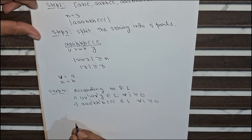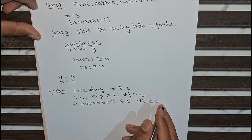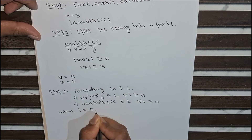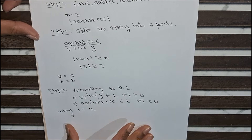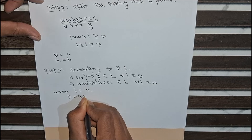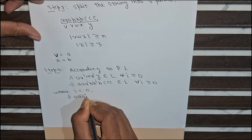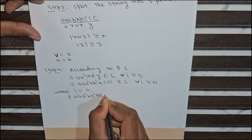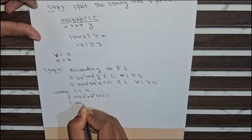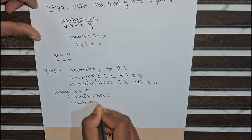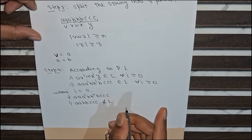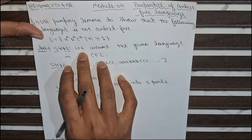Now we will put the value of i equal to 0. The equation becomes: aa, a^0, b, b^0, b, c, c, c. The final string will become aa, bb, ccc — which does not belong to the language L. This means our assumption in Step 1 was wrong.